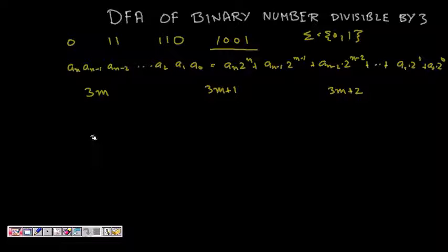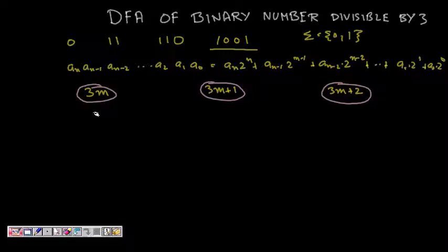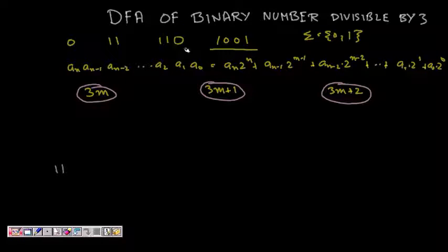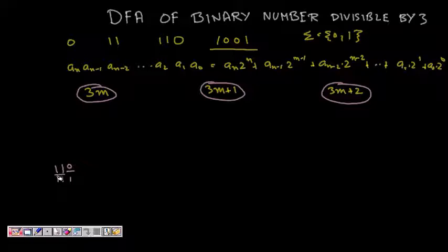Now we have to think about the transitions. Let's say we have some number, say 1,1. If I am scanning and I see a 0 or a 1, whatever was there gets a left shift by 1, and I get a 0 or 1 appended. So reading the next digit multiplies the current value by 2 and adds the new bit.